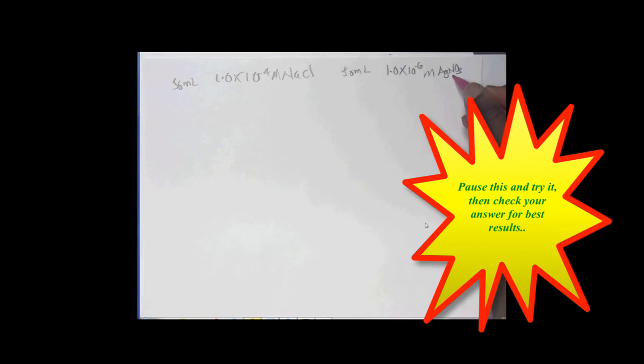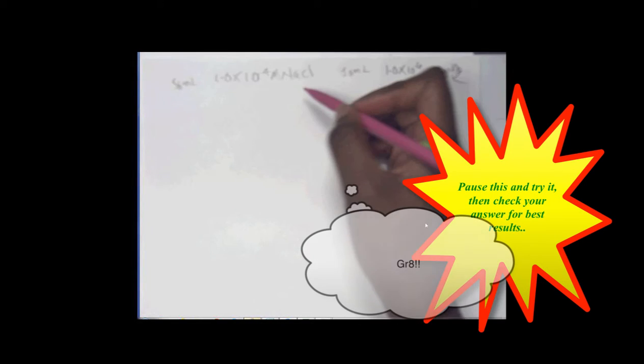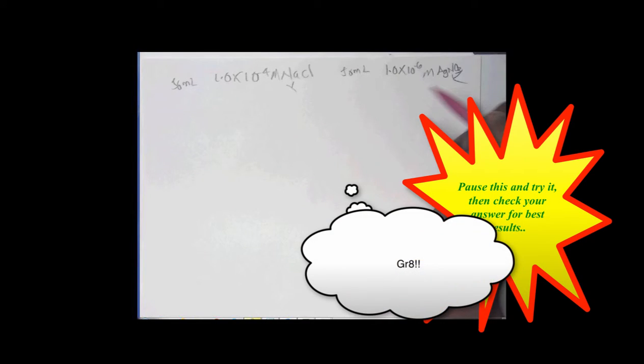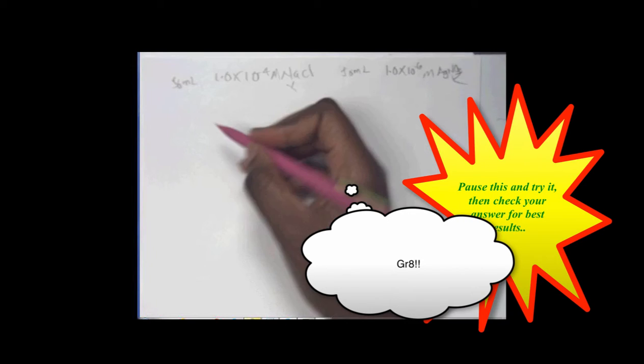Three becomes a spectator, and that becomes a spectator. And so what forms is a UCL?